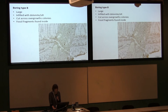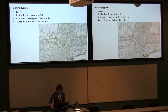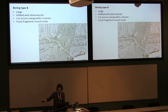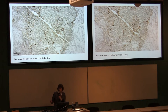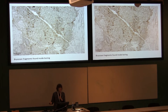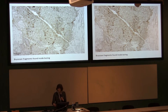The larger Type B boring is bigger, infilled with dolomite and silt, and cuts across multiple overgrowths — you can see it cutting right across four layers. Significantly, you find fossil fragments inside it, including bits of cryptostone and other trepidostone bryozoans that were not stigmatella. This gives an idea of other fauna present in this area.